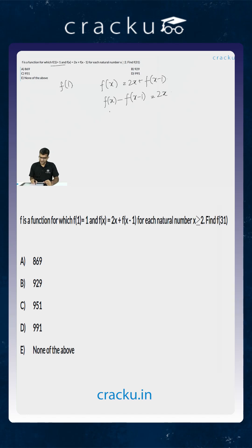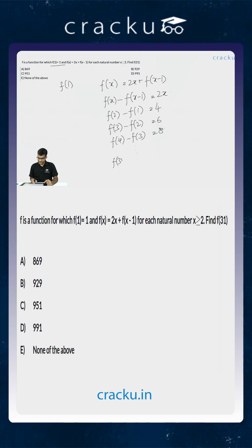So the value of f(2) minus f(1) is equal to 4. Similarly, the value of f(3) minus f(2) is equal to 6. The value of f(4) minus f(3) is equal to 8, and so on. Similarly, the value of f(31) minus f(30) is equal to 62.